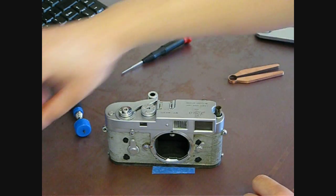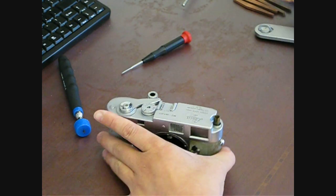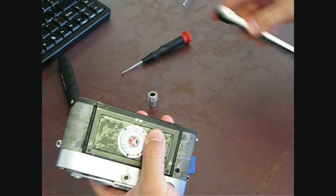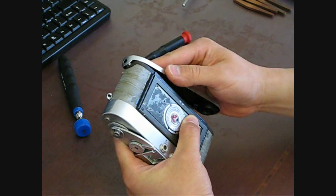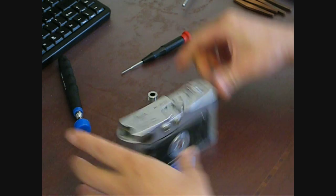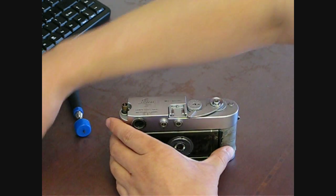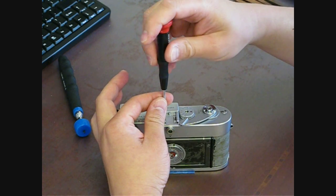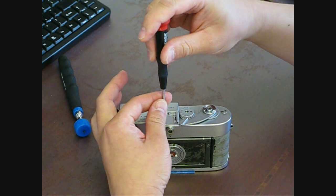That's what the retaining ring looks like. So the next thing we're going to do is go ahead and take off the cold shoe. And that just requires some regular four screws from the top.